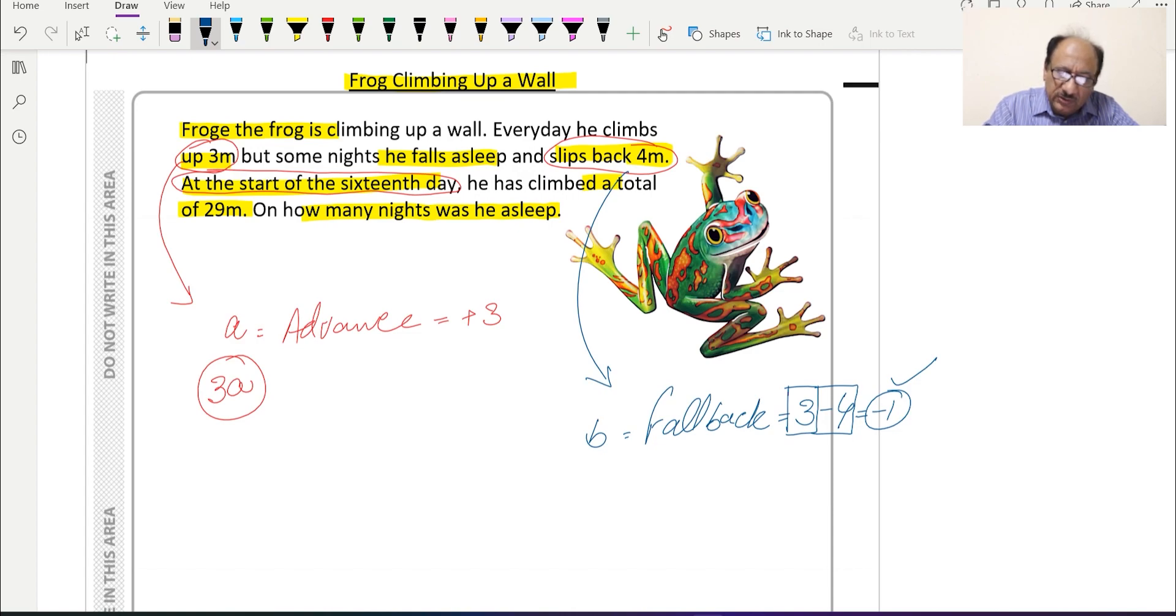Now we can form an equation. The equation is that both days and nights are adding up. 'a' plus 'b' are adding up to 15 because 16th day is just started.